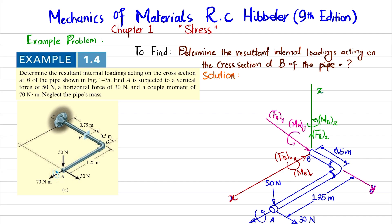So there will be three forces and three moments in total. We will find these using equations of equilibrium. The X, Y, and Z axes are established at B on the free body diagram of segment AB. The resultant force and moment components at the section are assumed to act in positive directions and pass through the centroid of the cross section at B.